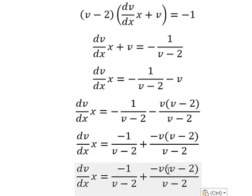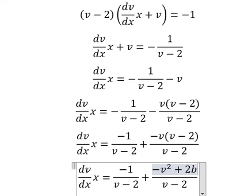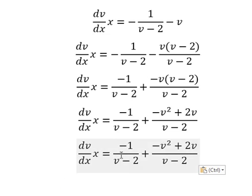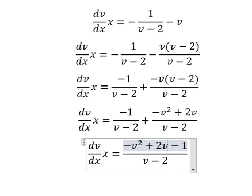This one, we need to expand. And you get negative v squared plus 2v. Negative 1 with this one, we combine together. And you get negative v squared plus 2v minus 1.